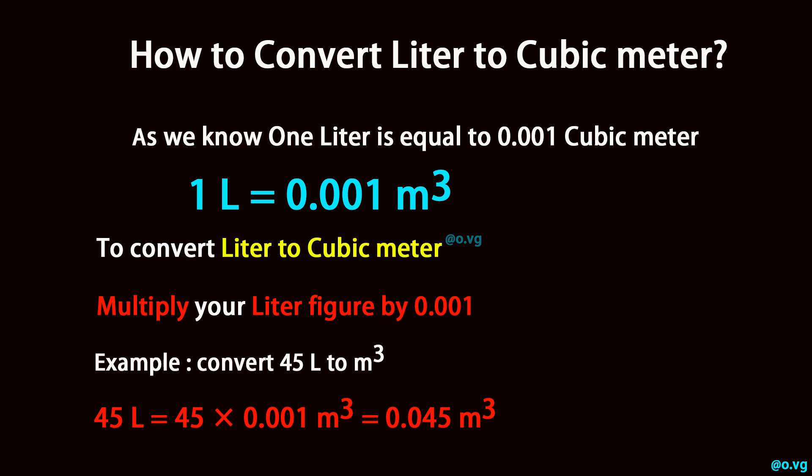Example: convert 45L to m³. 45L equals 45 × 0.001 cubic meters, which equals 0.045 cubic meters.